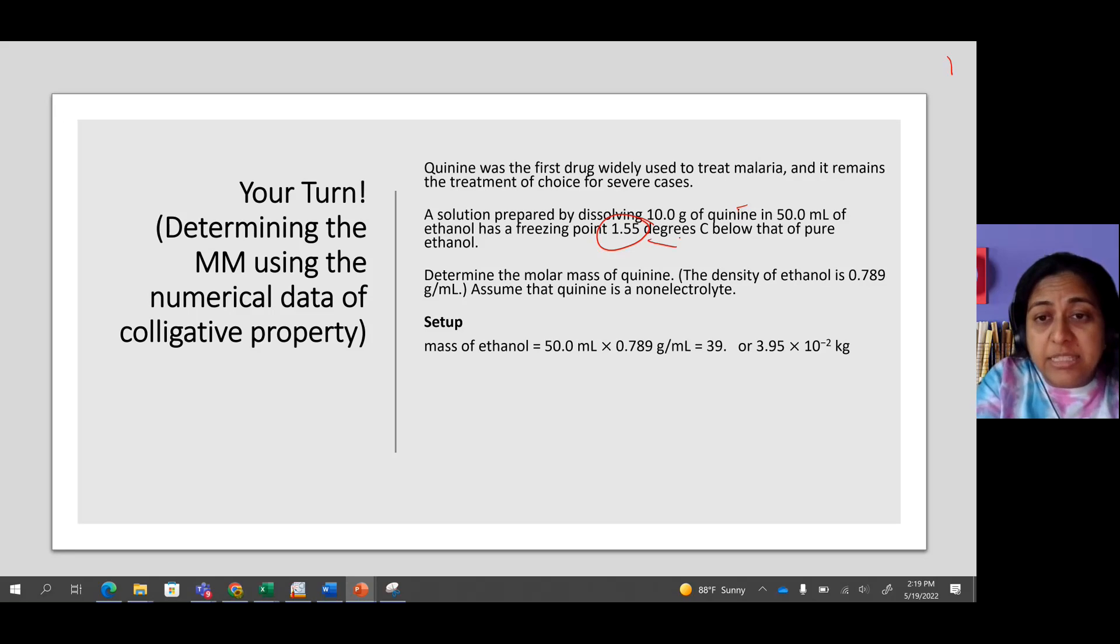What is that amount? That is the delta Tf. Determine the molar mass of quinine. The density of ethanol is 0.789. We are given the density.